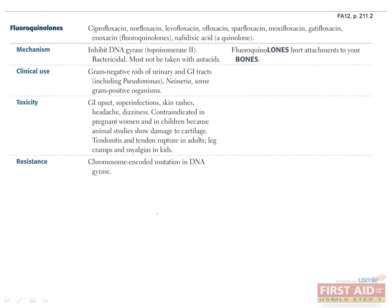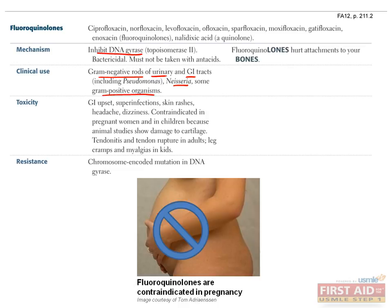Fluoroquinolones are bactericidal antibiotics that inhibit DNA gyrase. They are typically used in the treatment of gram-negative rods in urinary and GI tract infections, as well as Neisseria and some gram-positive organisms. Common reactions include GI upset, skin rashes, headache, and dizziness. Animal studies have shown damage to cartilage, which is why these drugs are contraindicated in pregnancy and childhood.